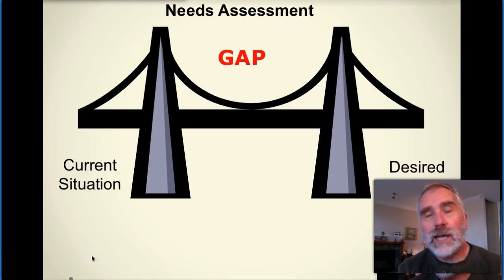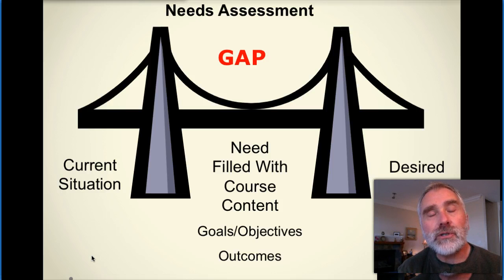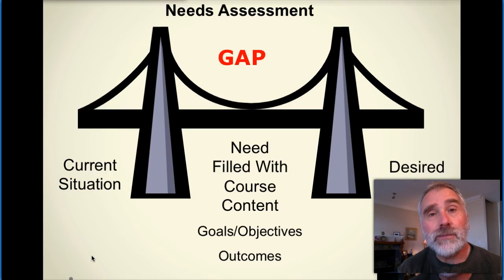So what we have to do is establish what this gap is and how do we fill it. It's filled generally by course content, and we establish goals, objectives, and if we're using the outcomes-based approach, we're talking about outcomes. That's how we bridge the gap.